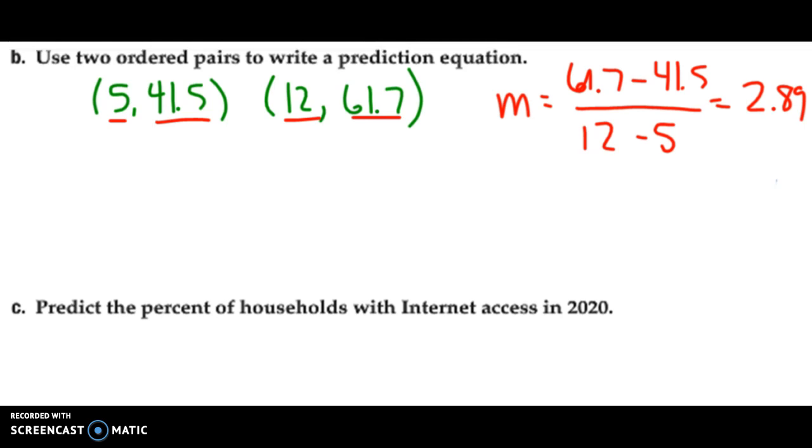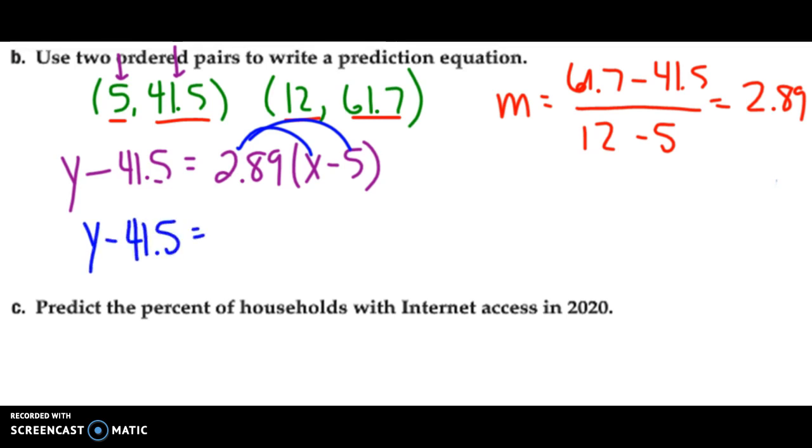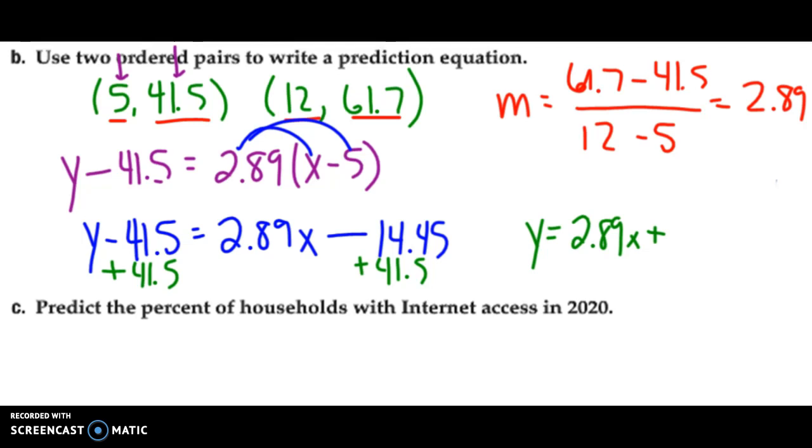So, now I know my slope. And if I want to write my equation for my line, I'm going to first use the point-slope form. So, I'll use the first point, x1, y1. And I'll say y minus 41.5 is equal to 2.89 times x minus 5. So, I'll solve this out by distributing the 2.89: y minus 41.5 is equal to 2.89x minus 14.45. Now, I'm pretty close. The last thing I have to do is get y by itself. So, I add 41.5 to both sides. And I finally get my prediction equation is y equals 2.89x plus 27.05.